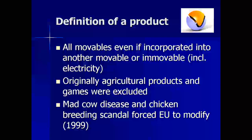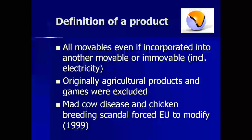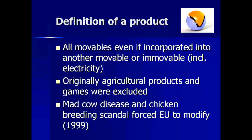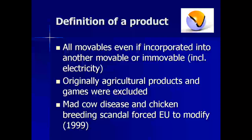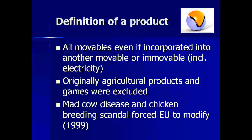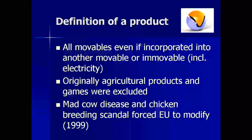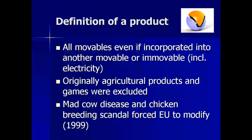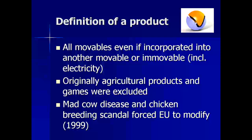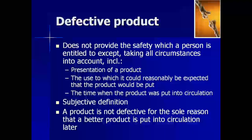The definition of a product in the directive is a broad definition. All movables, even if incorporated into another movable or immovable, are considered to be a product. The directive also extends the definition to electricity. The original exclusion of food products and games no longer exists since the 1999 modification. The broad definition of product gives wide protection for consumers, as no matter how cheap or small the product is, or what nature the product has, strict liability rules are applicable in case of injuries and damages suffered due to its defect. The interpretation of a product was never a problem in Europe and the European Court of Justice never received a preliminary ruling to interpret the definition of a product.